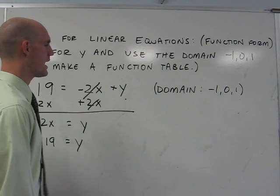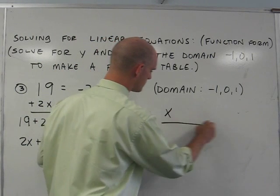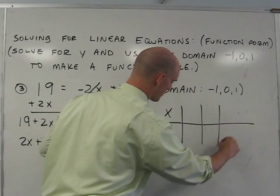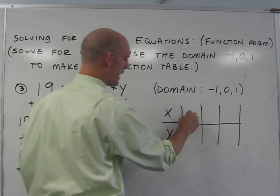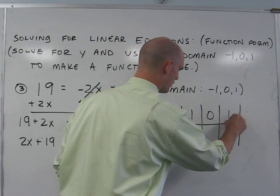The second part is to make a table of values. So I'll draw my table, x, y, and use the domain or the input negative 1, 0, 1.